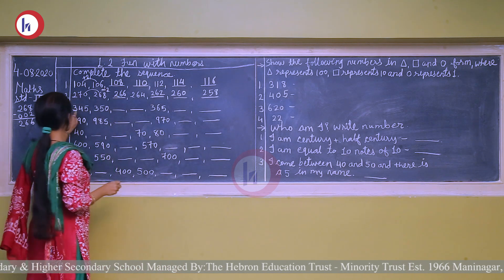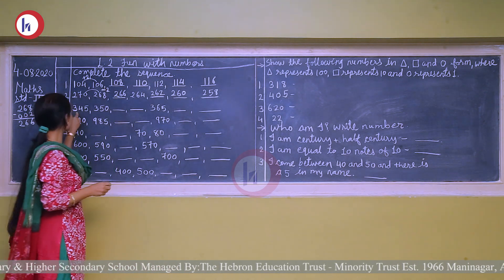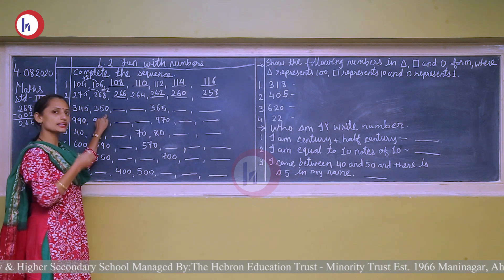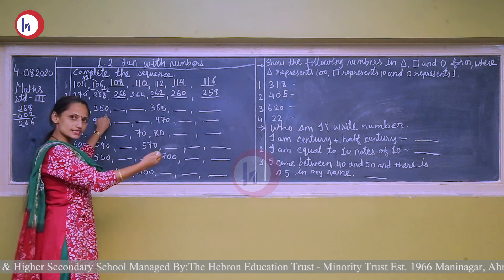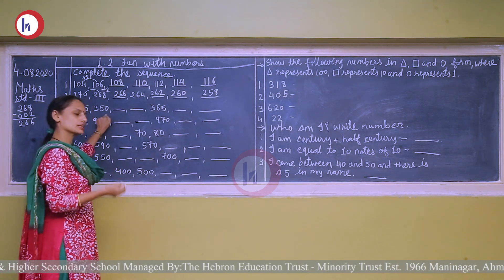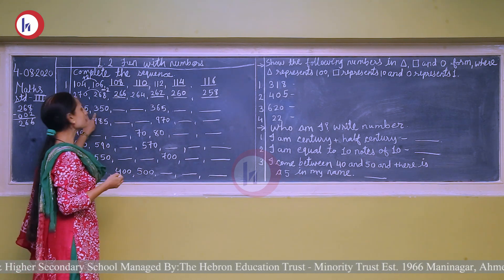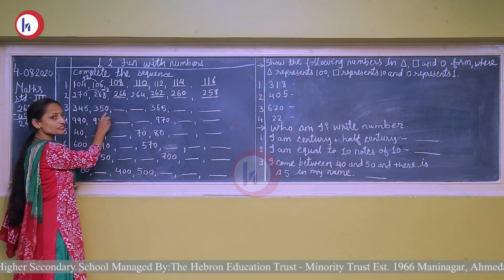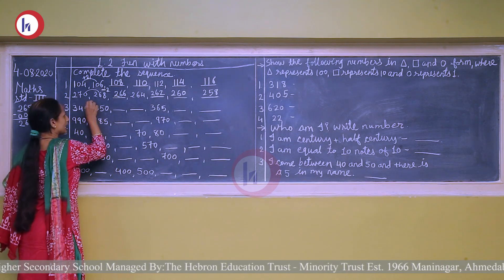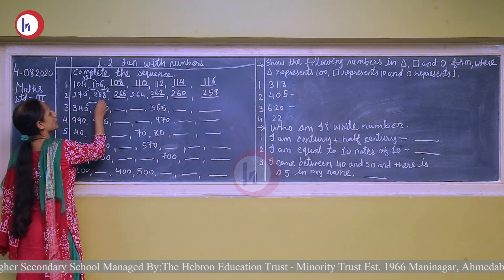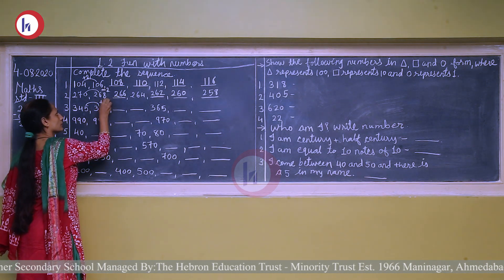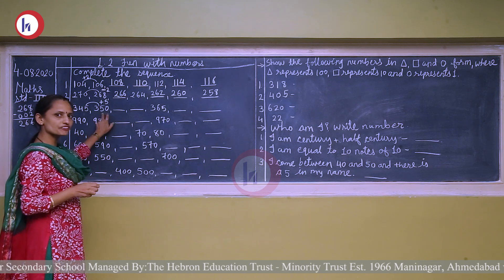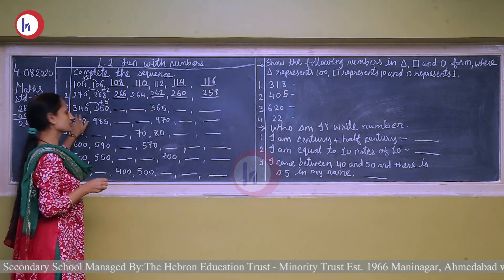Next: 345 and 350. Here the number is increasing, so it is a forward counting. We will find the difference: 345 and 350 — if we add 5 to 345, we get 350.